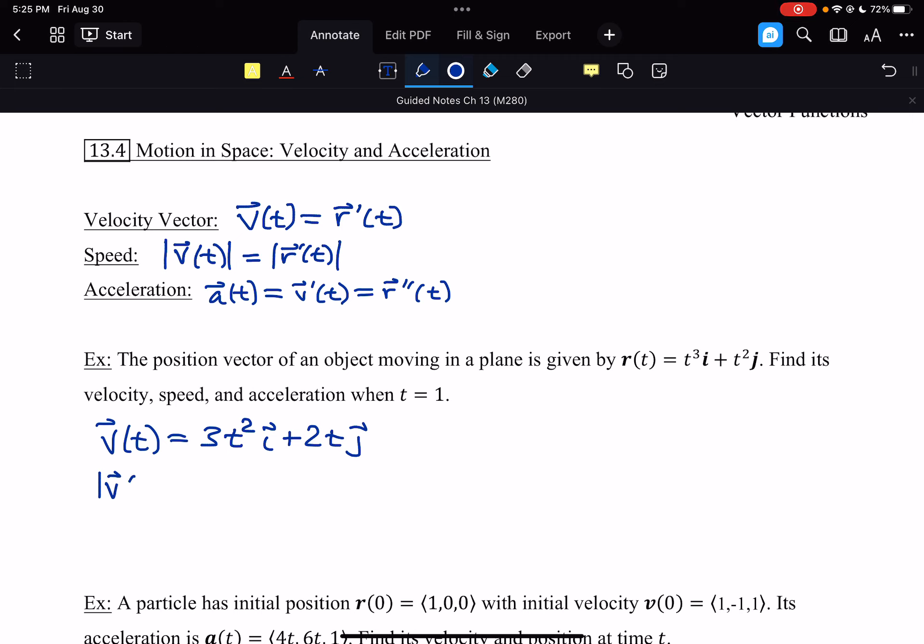The speed is going to be the magnitude of this one that we just found. So as a formula, that's going to be √(9t⁴ + 4t²). And then acceleration is the derivative of velocity, so we get 6ti + 2j.